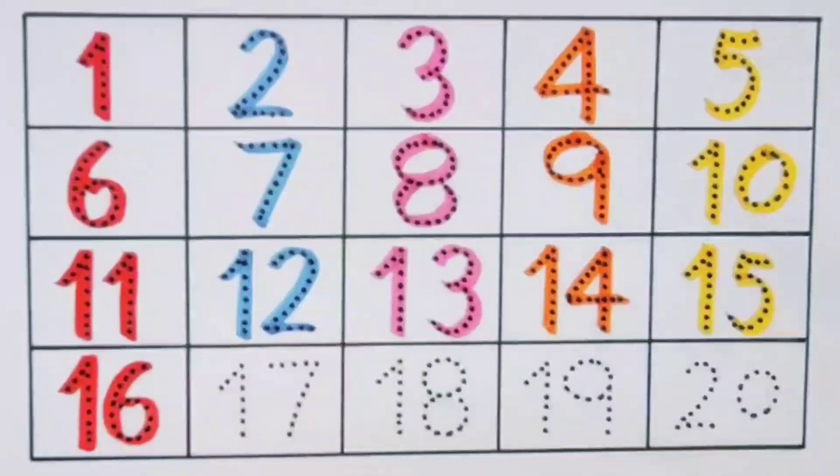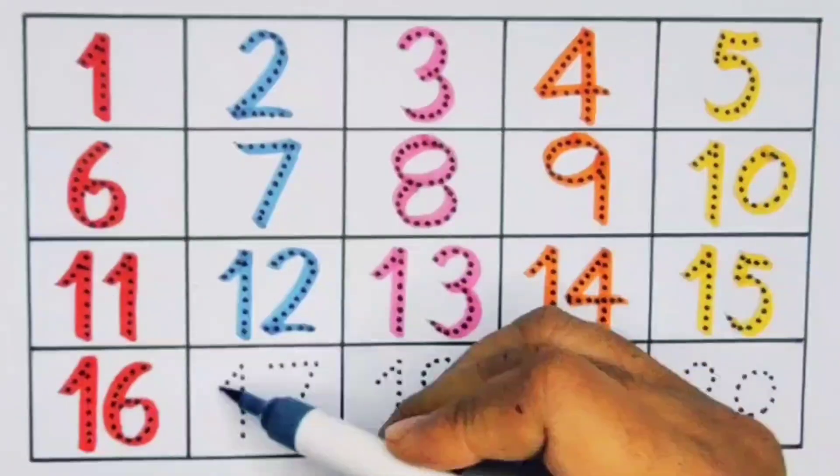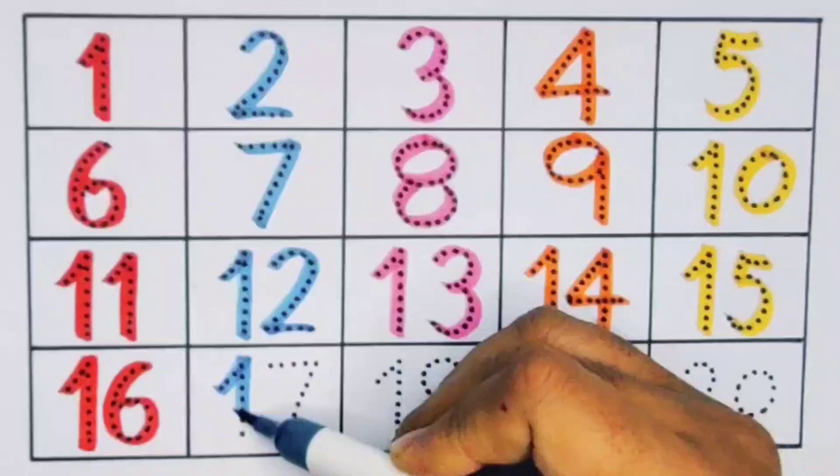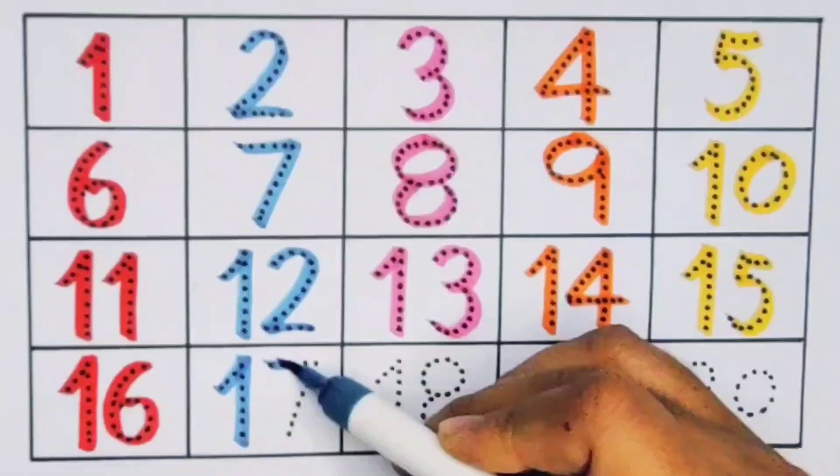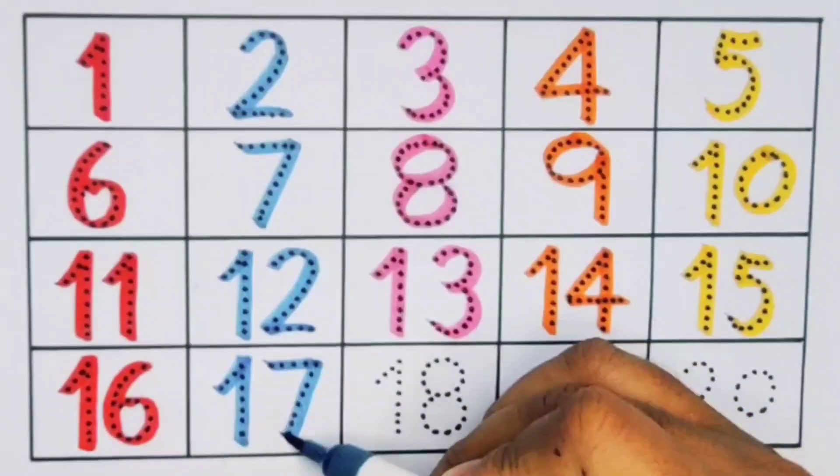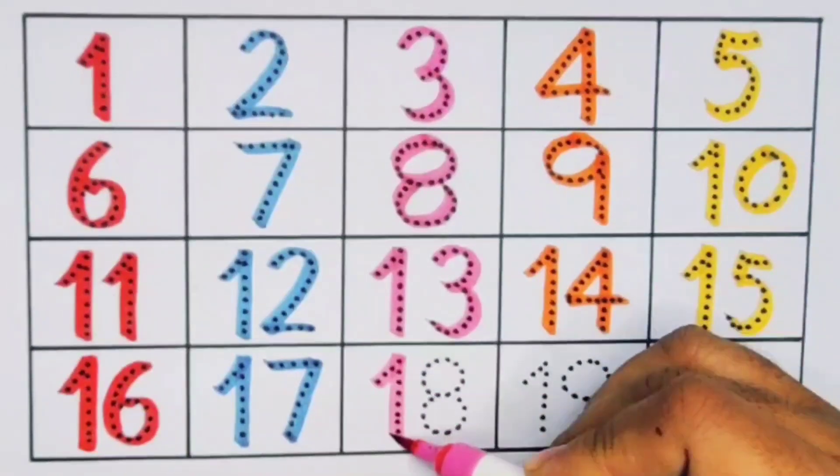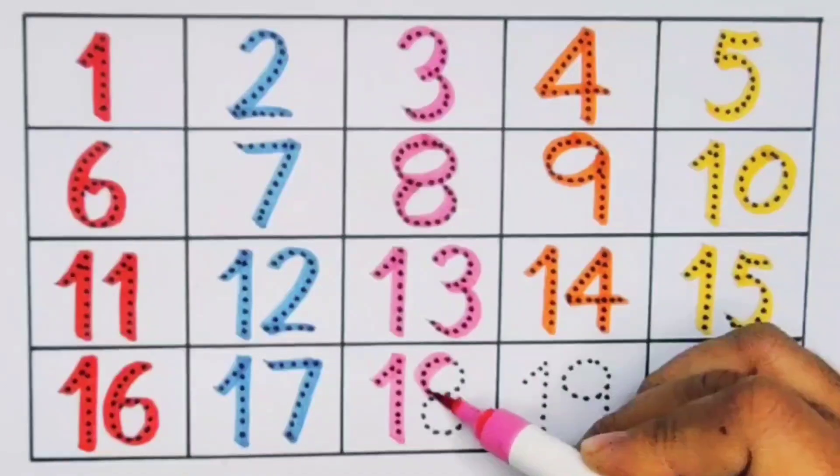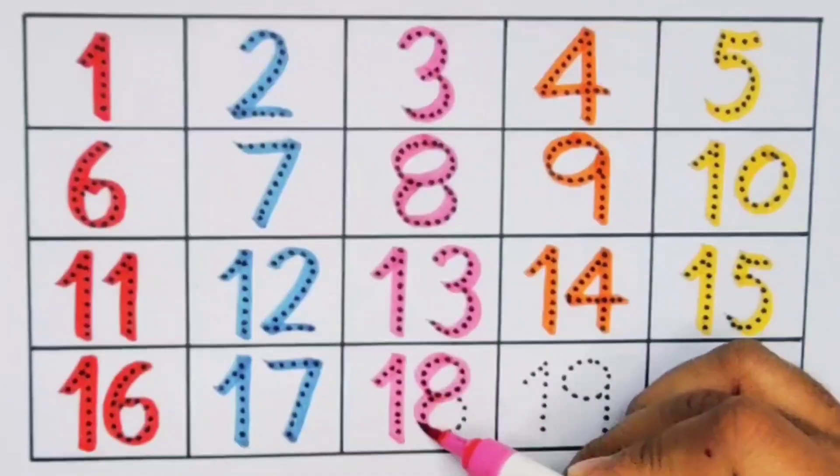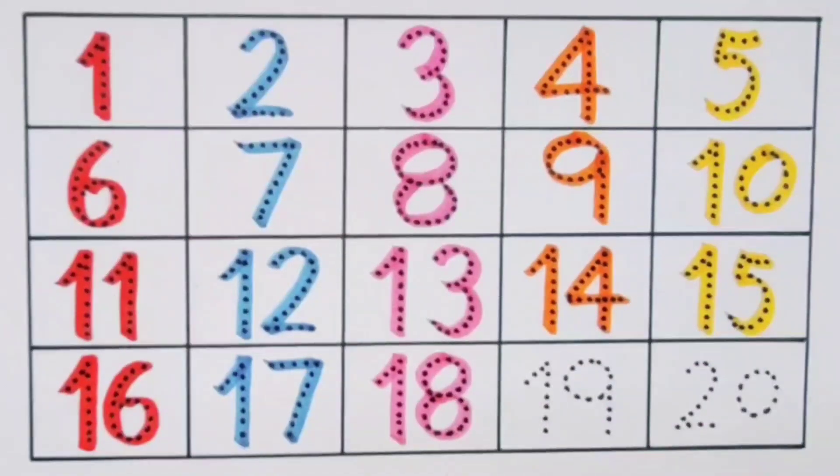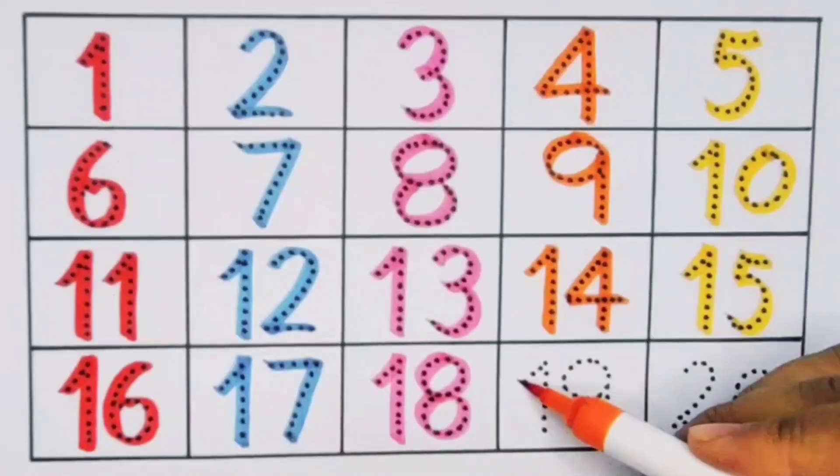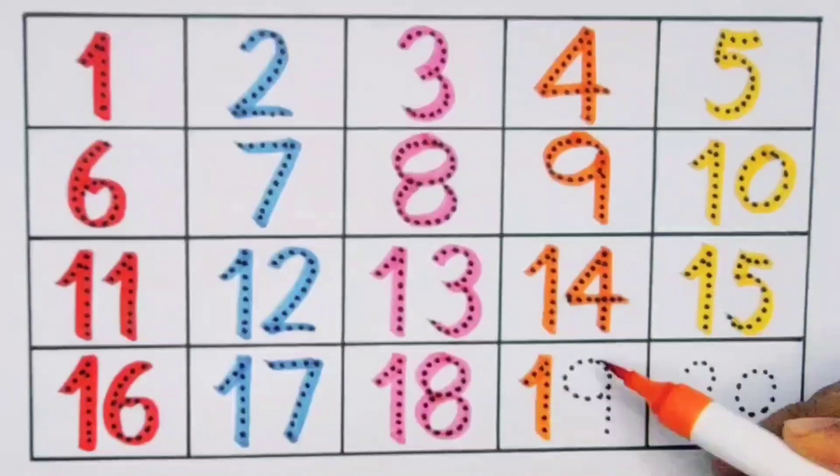Next, number 17. 1-7, seventeen. Next, number 18. 1-8, eighteen, number 18. Next, number 19. 1-9, nineteen, number 19.